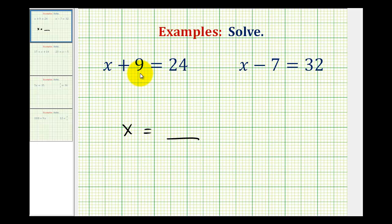We can do this by performing the opposite operation to both sides of the equation. Well, the opposite of adding 9 would be subtracting 9. So we can subtract 9 on the left side of the equation as long as we subtract 9 on the right side of the equation.